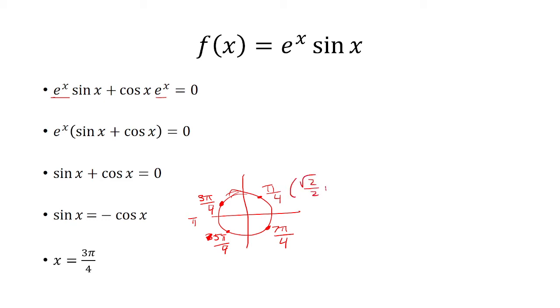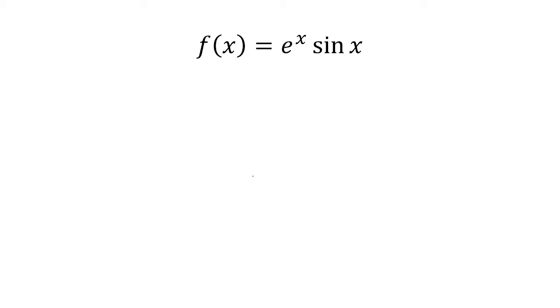And I'm going to write out the values here. So 3 pi over 4, the values are opposite. So the critical point that we found was that x equals 3 pi over 4.